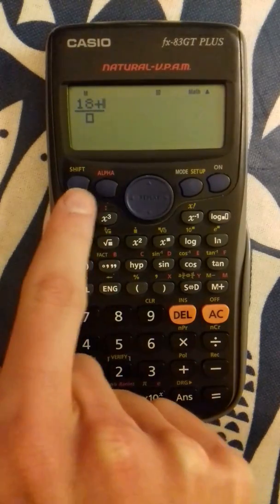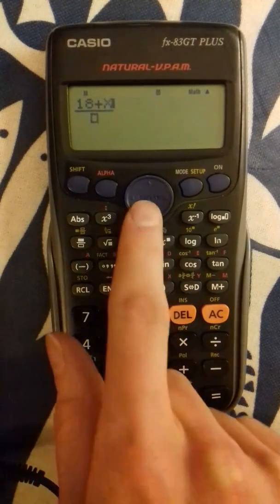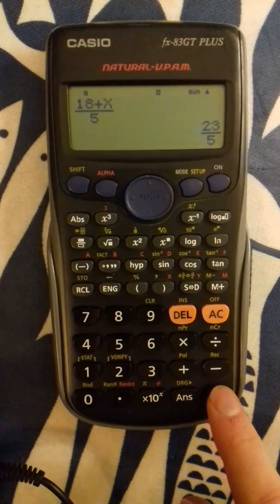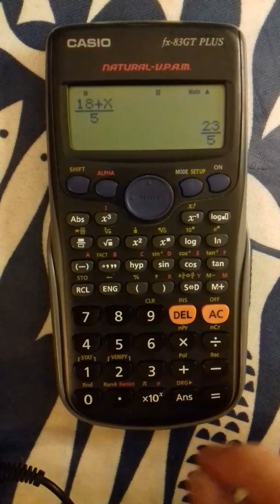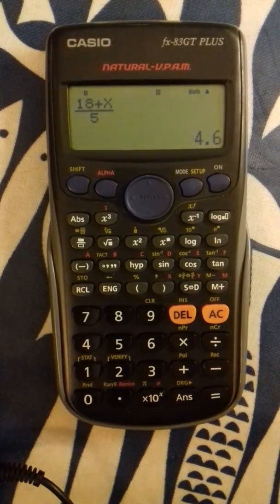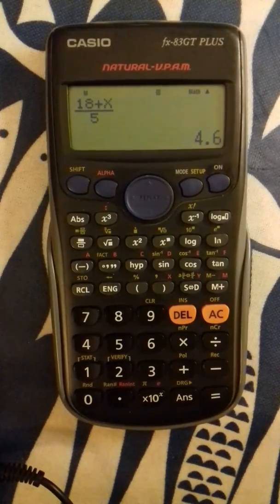18 plus x divided by 5 equals that. You could even give the answer as a decimal. So then you could write something like 18 plus x divided by 5 equals 4.6.